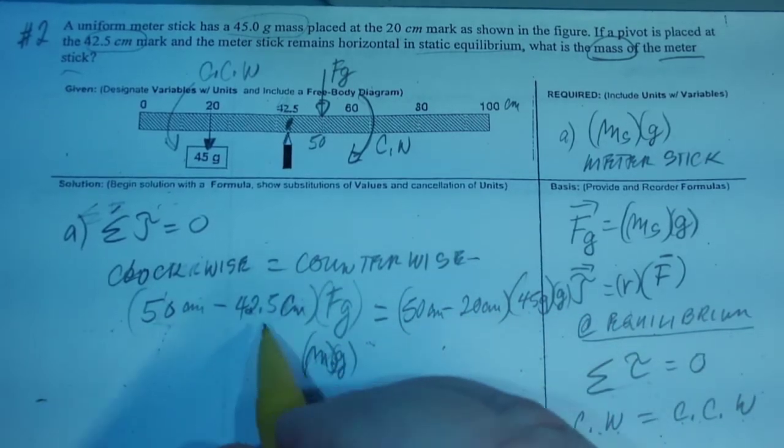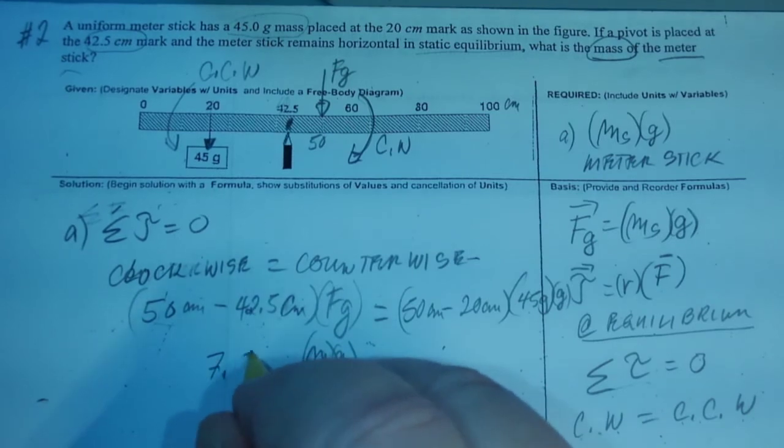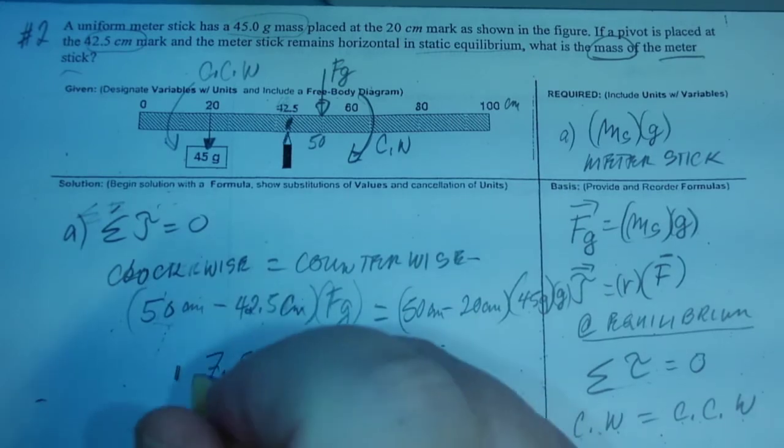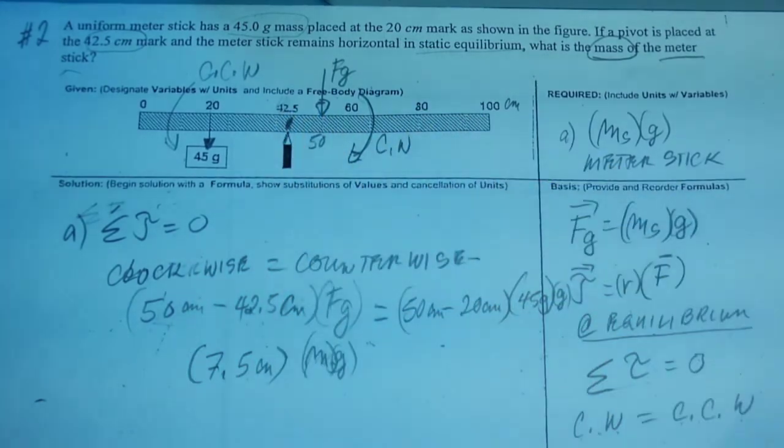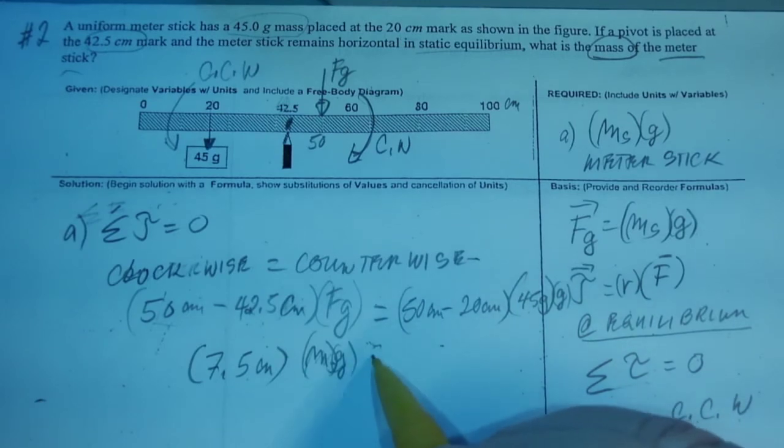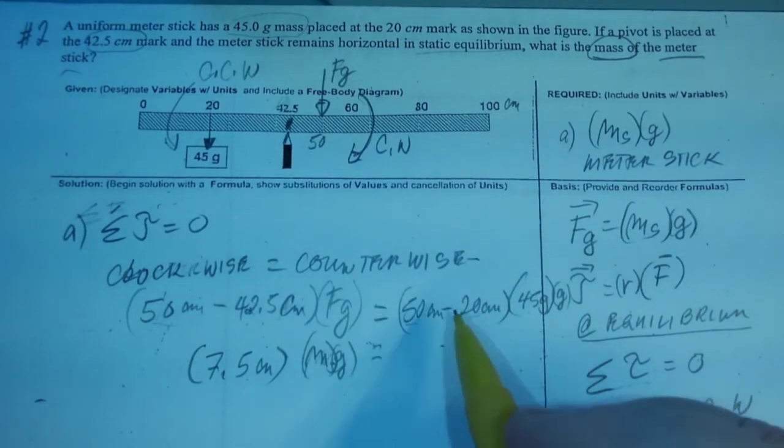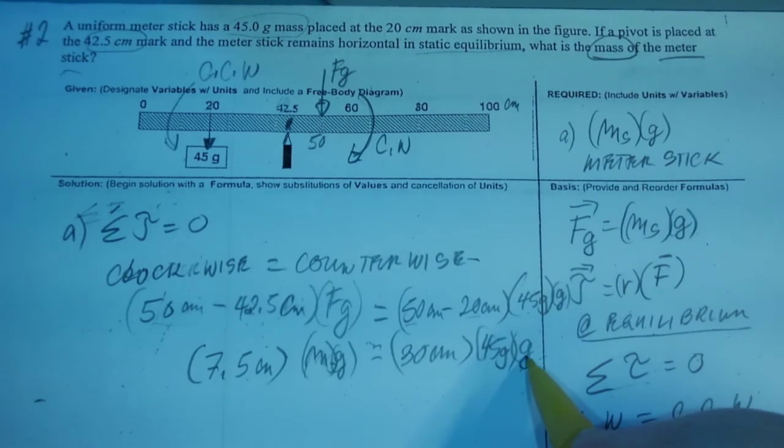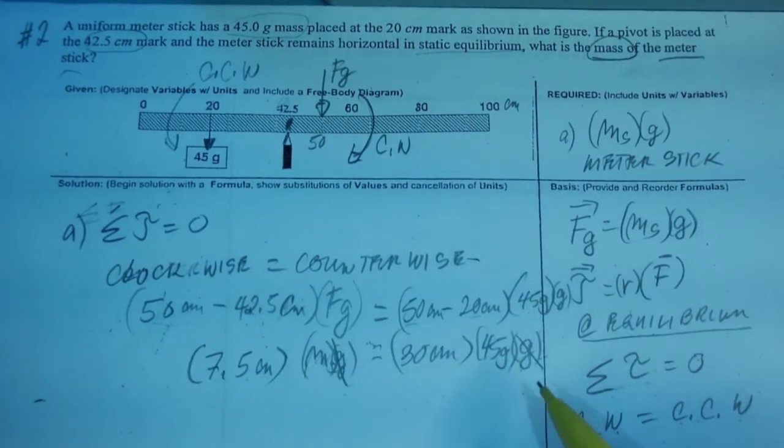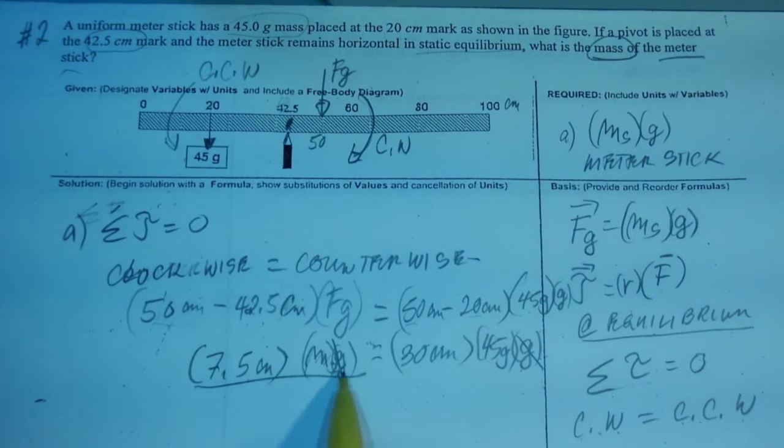Okay. So let's take the difference of that. I think it's 7.5 cm. And you can actually estimate, I mean, you can do it directly, but it's always good to write it out so you lessen your chances of error. 50 minus 20 is 30 cm times 45 grams times G. Okay, because G is on both sides, we can cancel that out. And to get rid of this, we divide it by 7.5 cm, both sides.